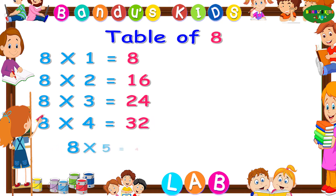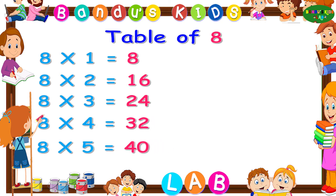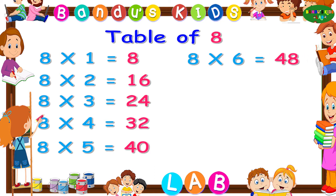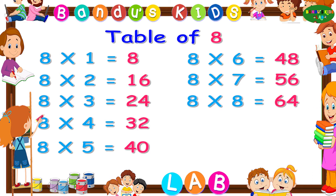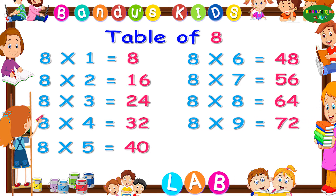Eight fives are 40. Eight sixes are 48. Eight sevens are 56. Eight eights are 64. Eight nines are 72. Eight tens are 80.